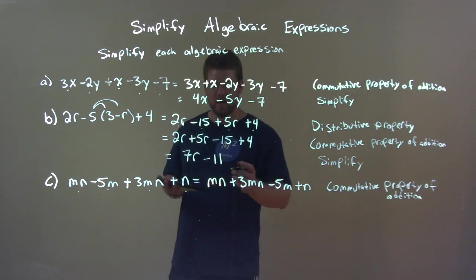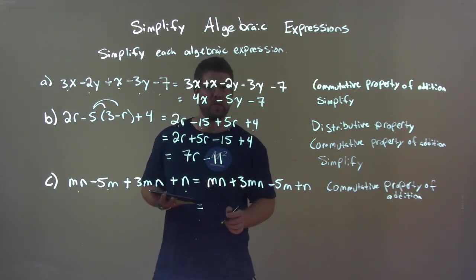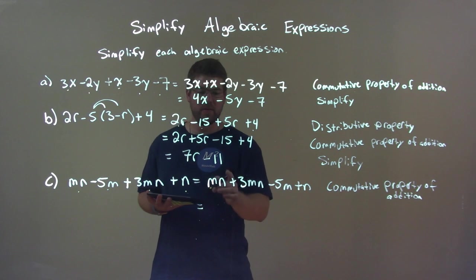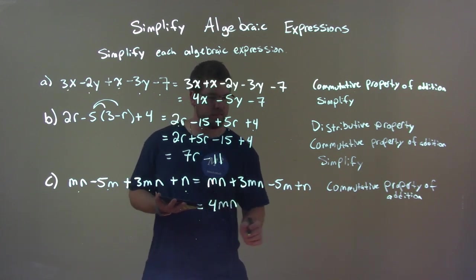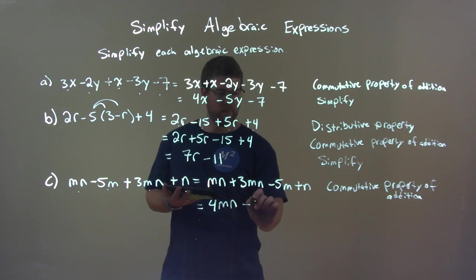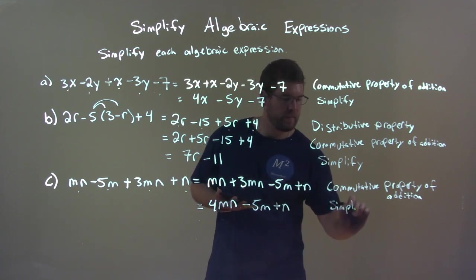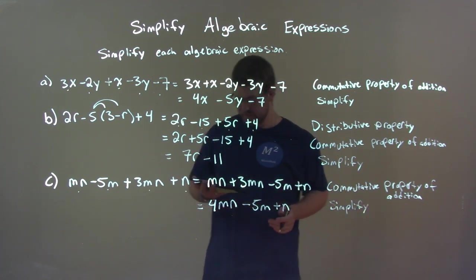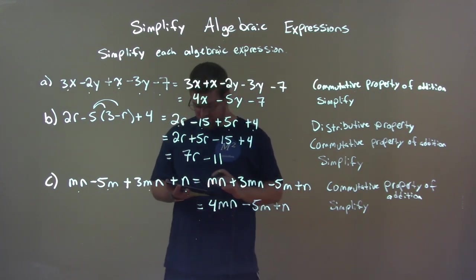Alright. Now, from there, let's go simplify. 1mn plus 3mn is a 4mn. Combine our like terms. We just now have the minus 5m. Nothing else to combine it with. Plus an n. We simplified. And we're done. We got the right answer. So did you get the same one? Let me know. Alright.